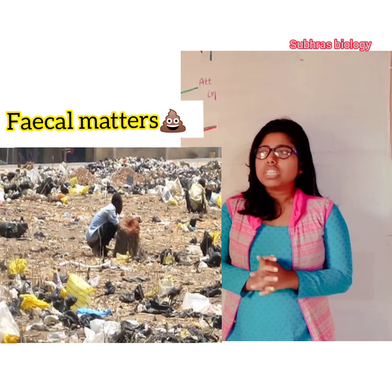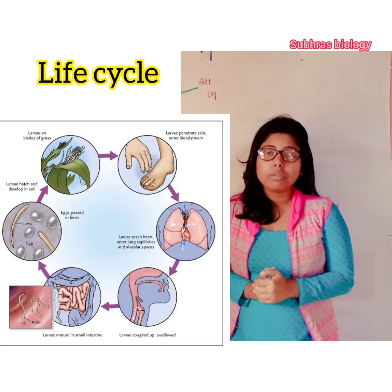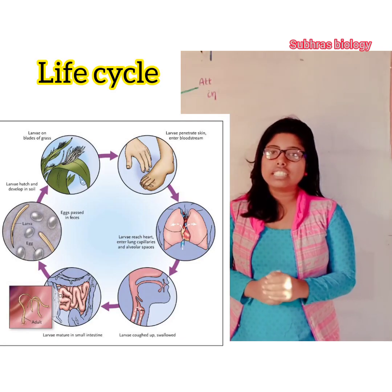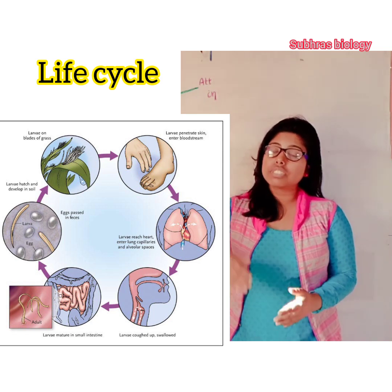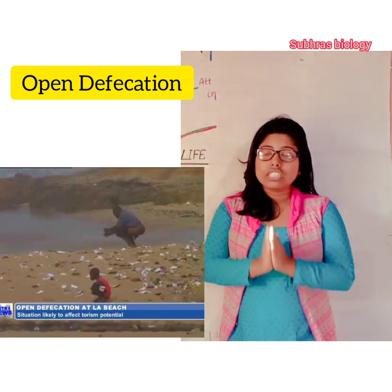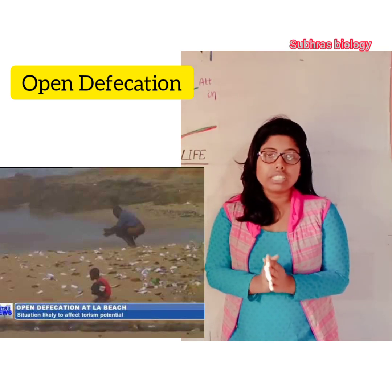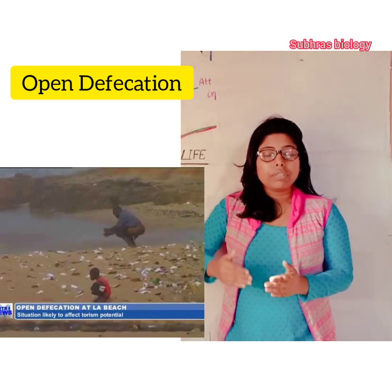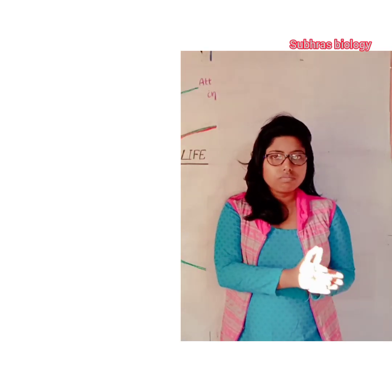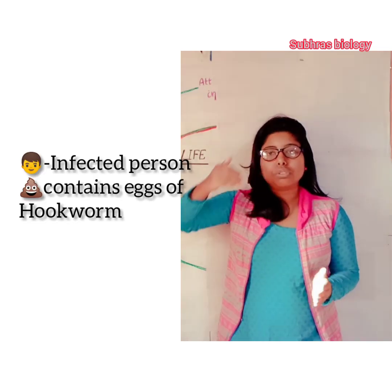Nowadays people are somewhat illiterate and they defecate outdoors. When an infected person defecates outside, the fecal matter contains eggs of Ancylostoma duodenale which get into the soil. There the eggs hatch out and molting takes place. From four to six weeks, it remains at the infective stage and hatches out to form the rhabditiform larva.